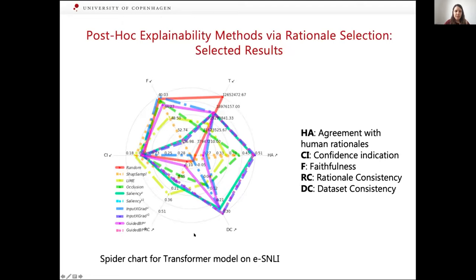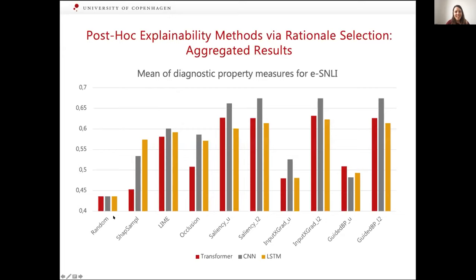We've evaluated multiple different types of models across all of these diagnostic properties. You can see the results here: we have human agreement, dataset consistency, and so on. On a very high level, these methods perform well with respect to different scores, meaning they are very different from one another with respect to different diagnostic properties. One finding is that even though they perform very differently, all of them perform better than a random explanation — they all somehow do better than just randomly picking a token. You can read the paper for more details.